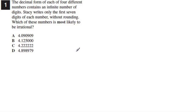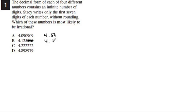We know that a rational number is defined as a number that can be written as a fraction. As a decimal, it either repeats or it terminates. So we're going to find which ones are rational, and then the one that's left will be irrational. So we have A, which has 4.090909 — the 09 repeats, so that's rational. B is 4.125000; we don't need those zeros, so the number terminates at 4.125, which is rational.